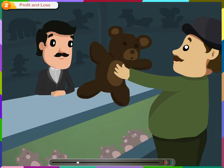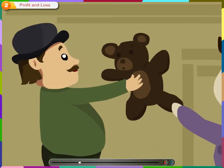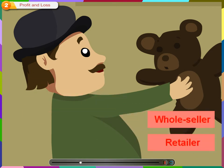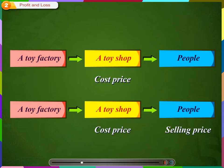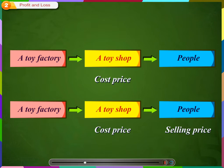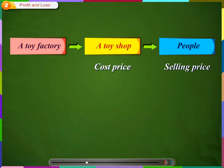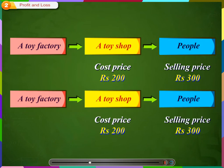In most cases, a middleman buys from the producer and sells the product to the consumer, and the middleman is either a wholesaler or retailer. The price with which the shopkeeper is buying the toys from the producer is called the cost price, and the price with which the shopkeeper sells the toys to the customers is called the selling price. Let us assume that the shop buys from the producer at Rs. 200 and sells it to the customers at Rs. 300. The shop has sold the toy at a higher price than the cost price. Therefore, it is a profit.